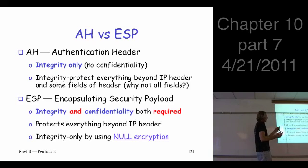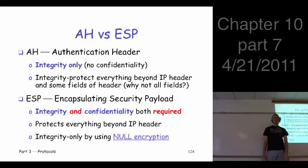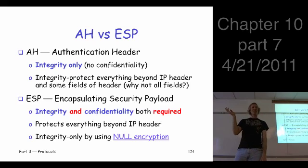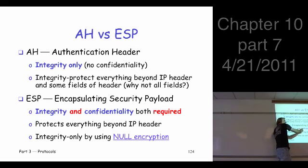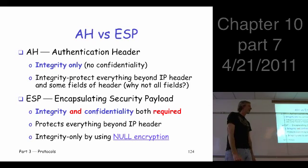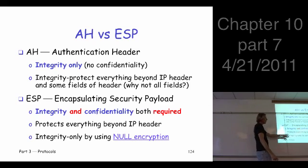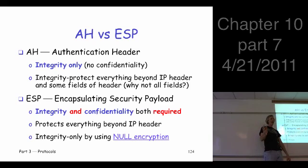AH protects the integrity of the data and some fields of the header — specifically the fields that can be protected. In contrast, there's ESP, which does both integrity and confidentiality, and it's required to do both. You must do integrity and confidentiality with ESP. However, ESP doesn't do anything to the header — no integrity, no confidentiality, nothing to the header — but the data must be encrypted and integrity protected.